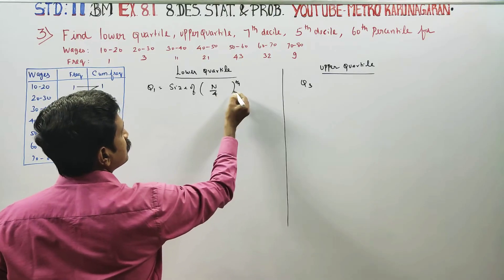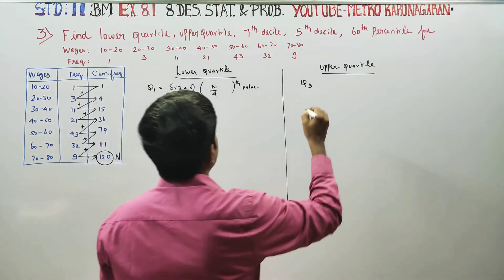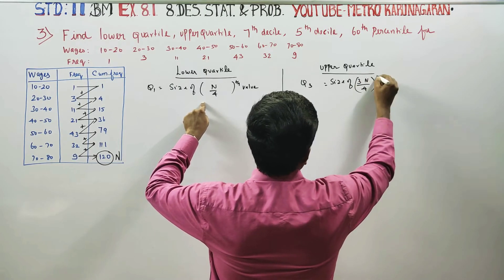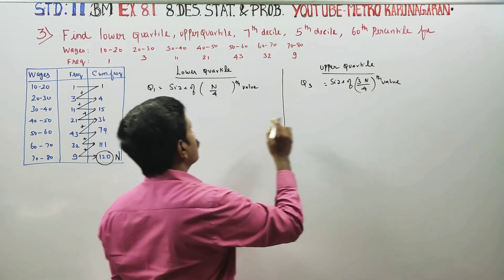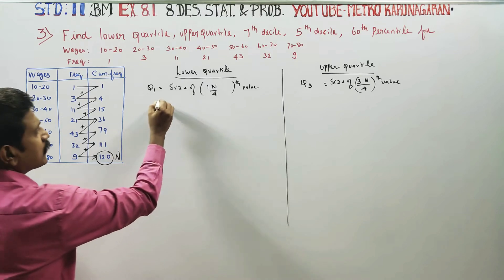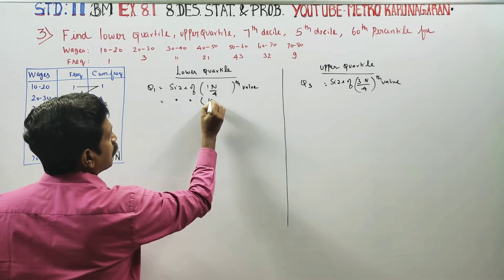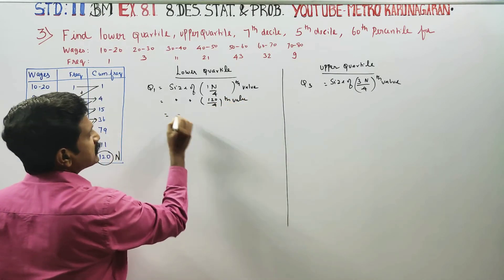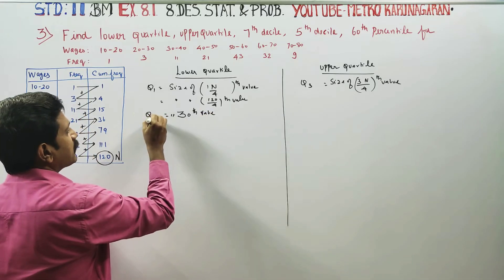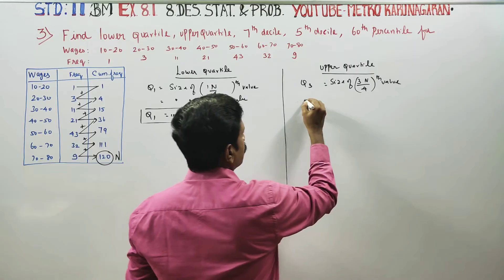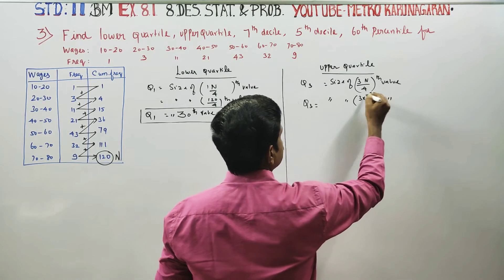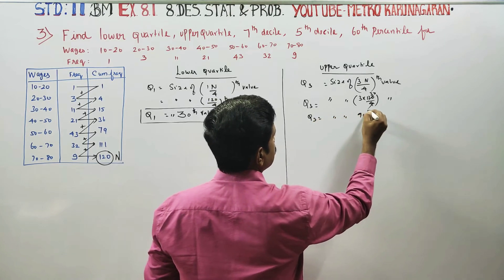This total is called N — capital letter N. N by 4 is the value for the lower quartile. For the upper quartile, 3N by 4 is the value. Now, 33 into 3 gives 90. So Q3 is equal to the size of the 90th value.